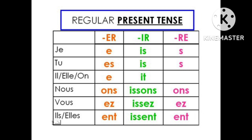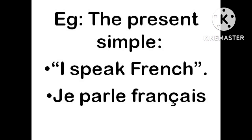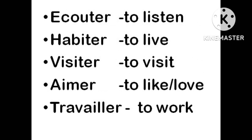The first group verb endings are: E, ES, E, ONS, EZ, ENT. Now let's apply this to the first ER group of verbs. Take parler — strike out ER and add the ending. One is done for you. For example, Je parle Français — I speak French.